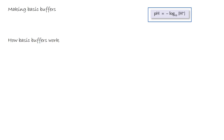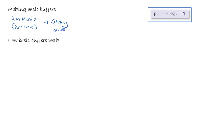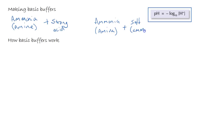The next thing we are going to look at is basic buffers. Making basic buffers — again we have two ways of doing this: we can either add ammonia or an amine, because these are our weak bases, combined with a strong acid; or again we could use ammonia or the respective amine with the ammonium salt in order to make our basic buffers.